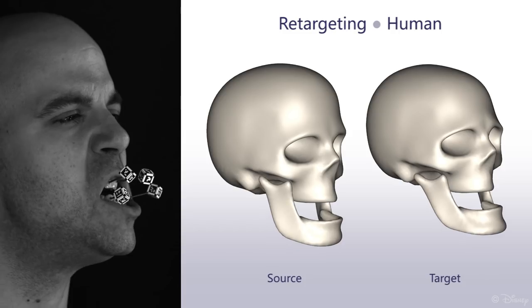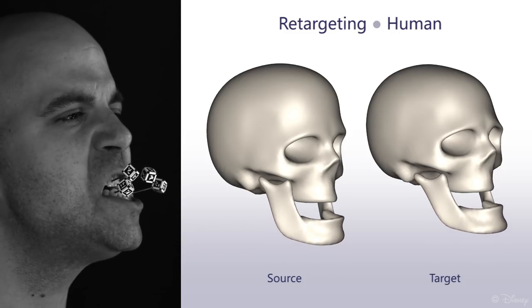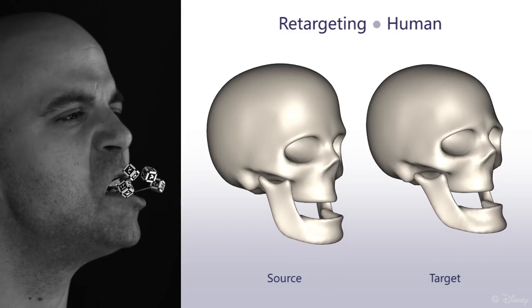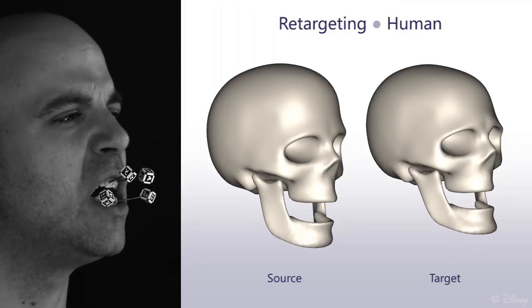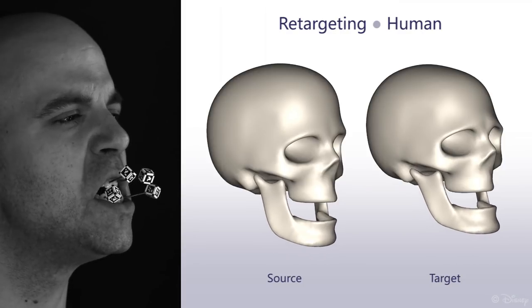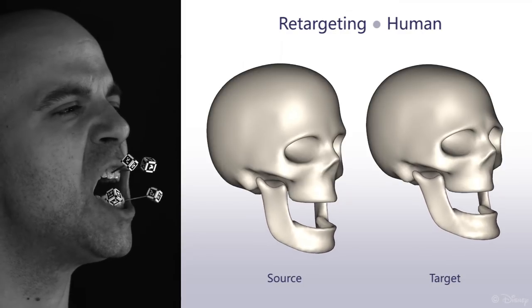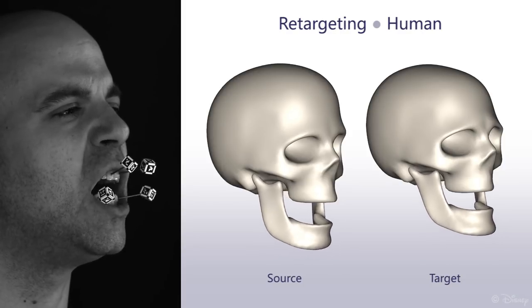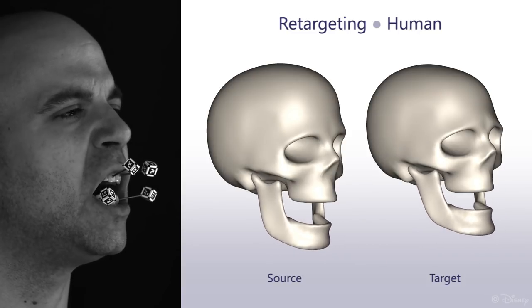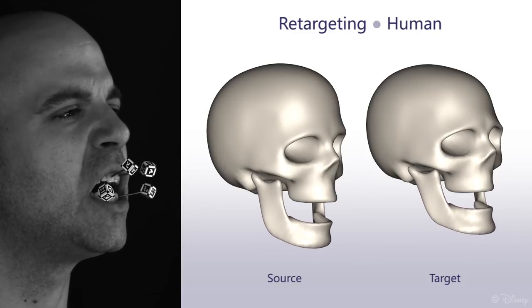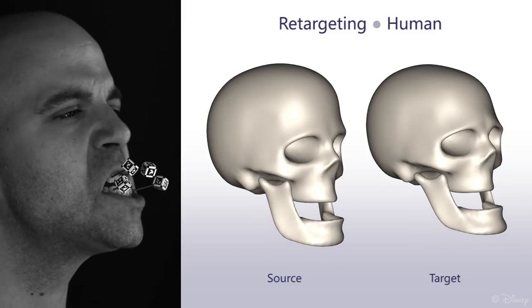In addition to proposing a new jaw rig empirically designed from captured data, we also present a method to retarget the rig to new subjects where captured data is not available. Here we use our adaptation technique to retarget our rig to a new actor and animate the target jaw from source data using our shield parameterization.